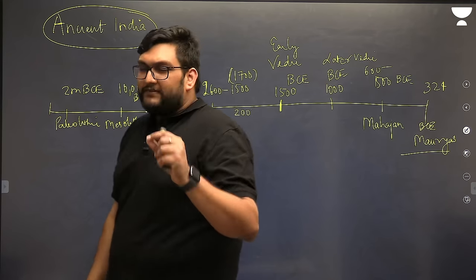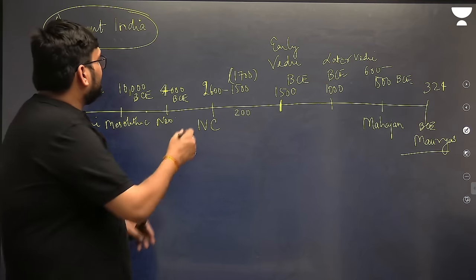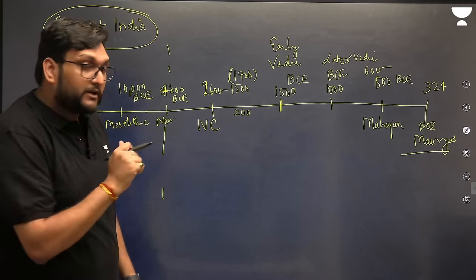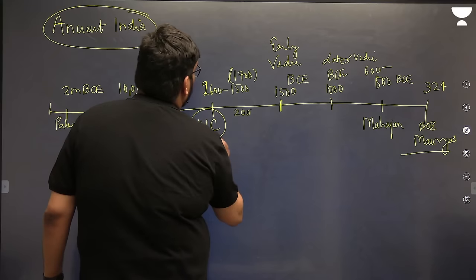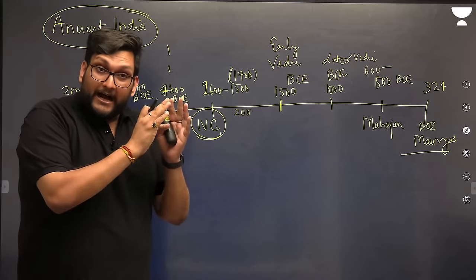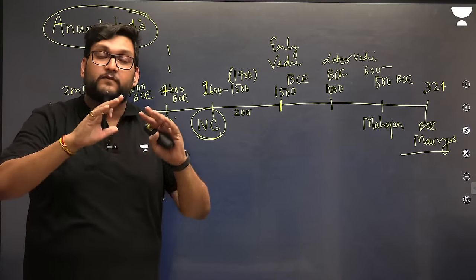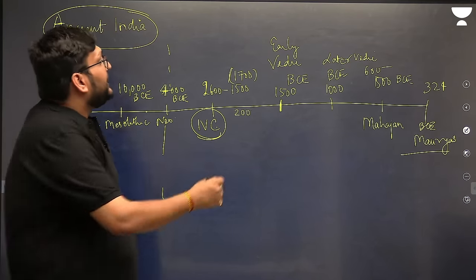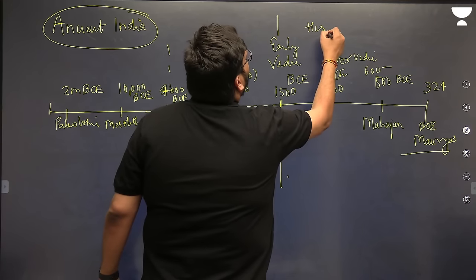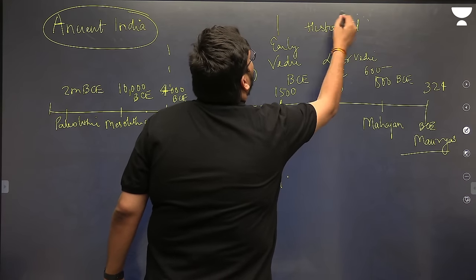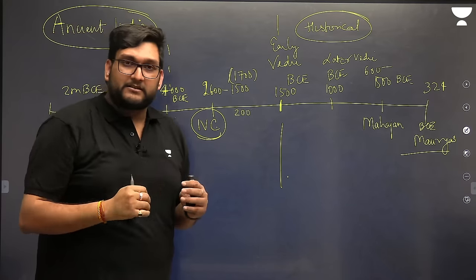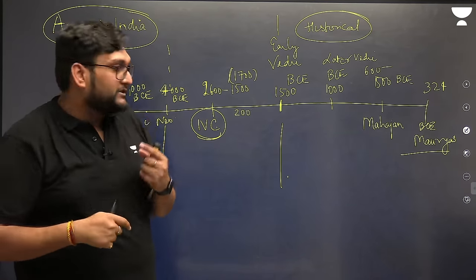When we talk about history, till the IVC point we call it prehistory because we only have archaeological records. After this is called proto-history because it has archaeological records and early writing, but we have not deciphered the script of IVC. From 1500 BCE onwards is called the historical period because we have Vedic texts which tell us about Rigvedic society, later Vedic society, and how Indian society was developing.